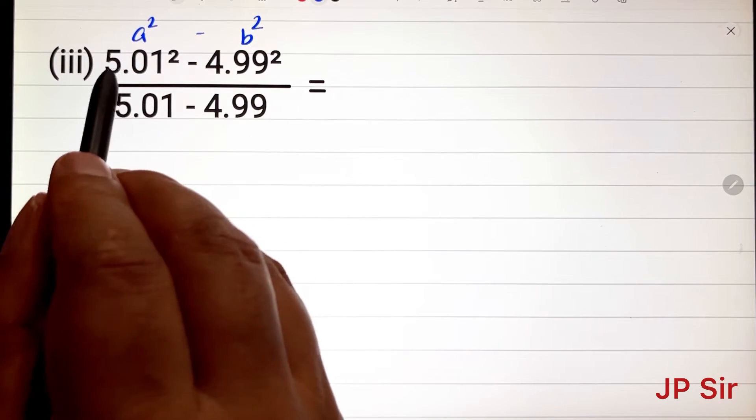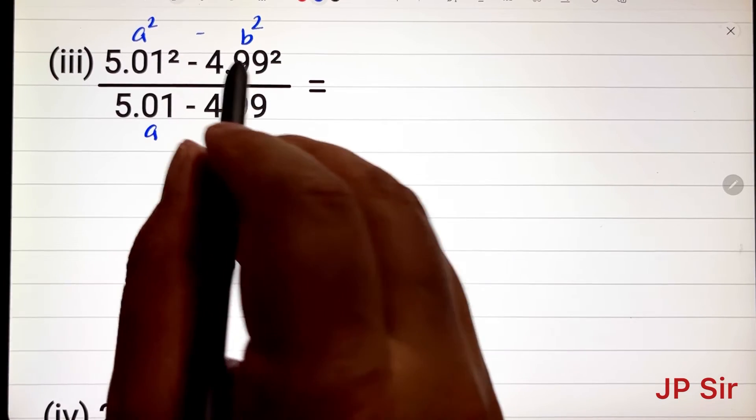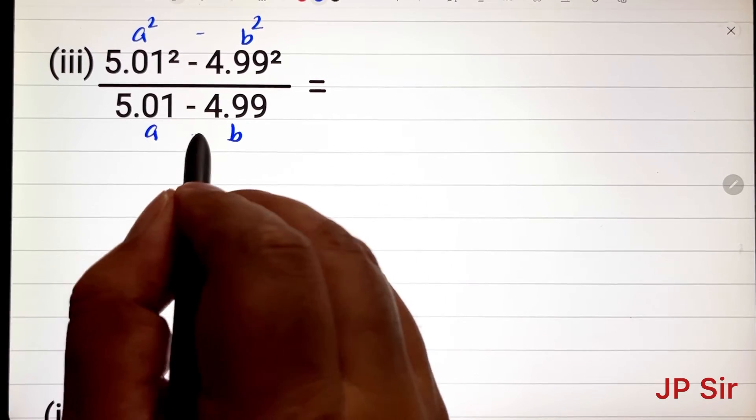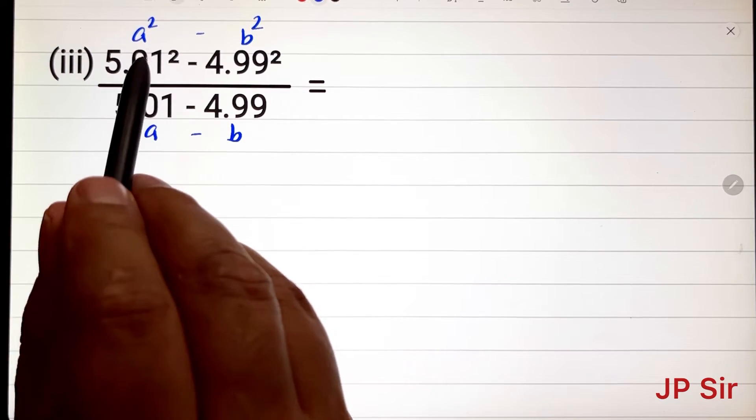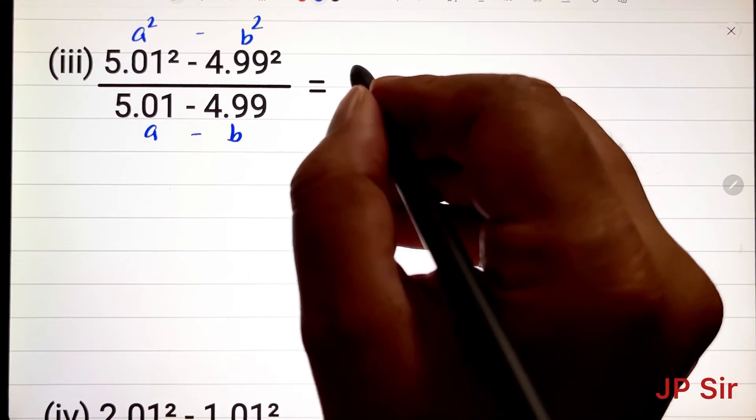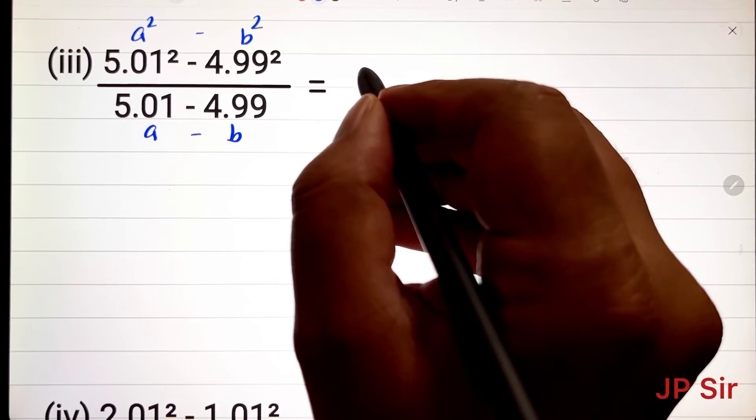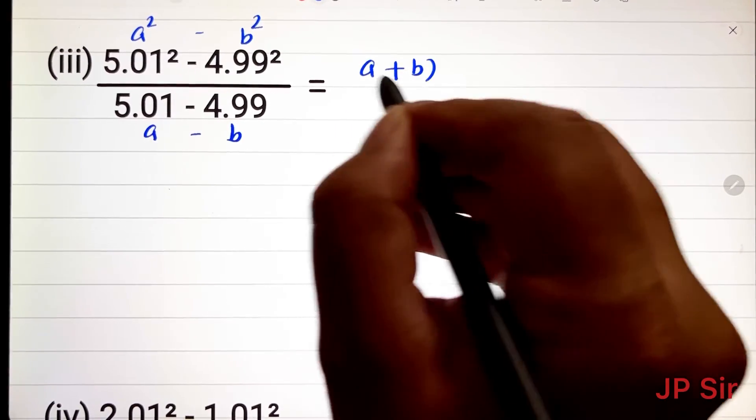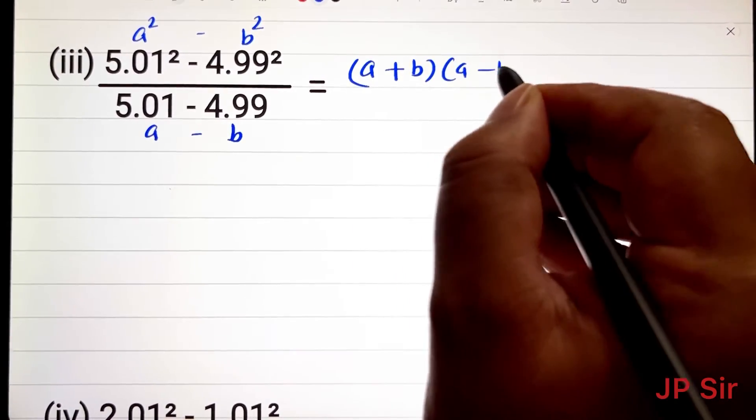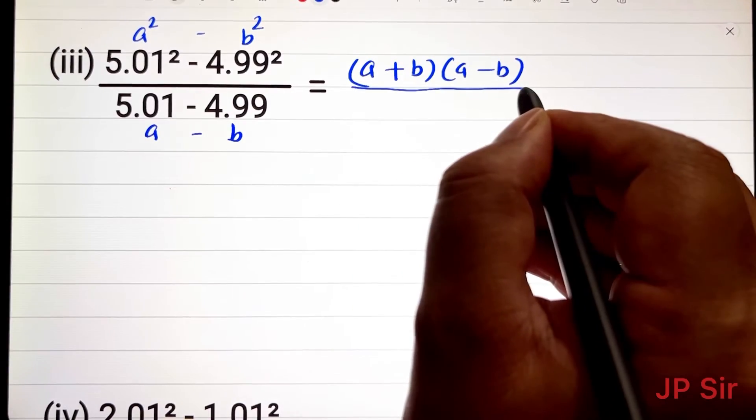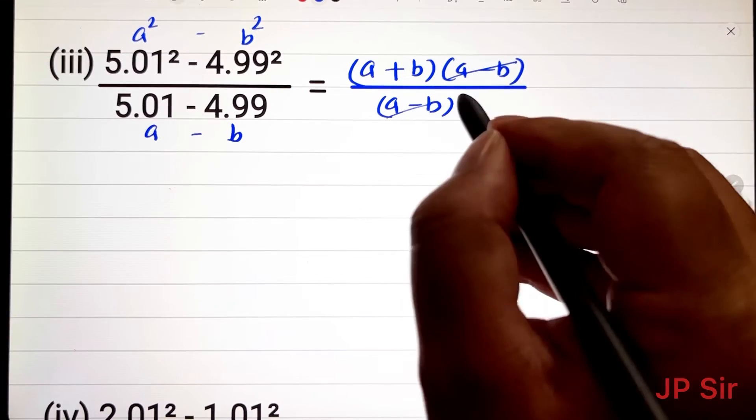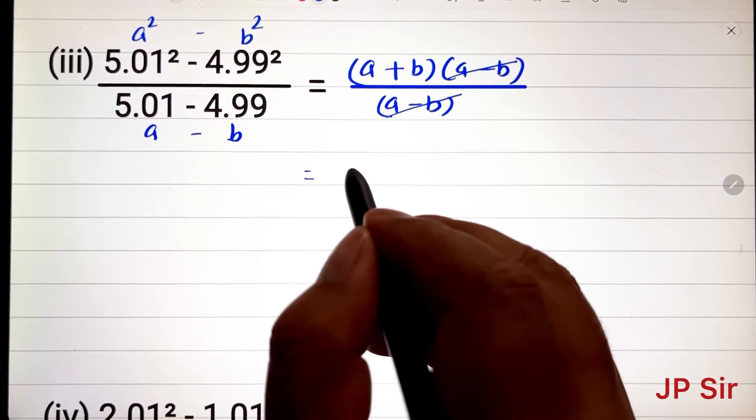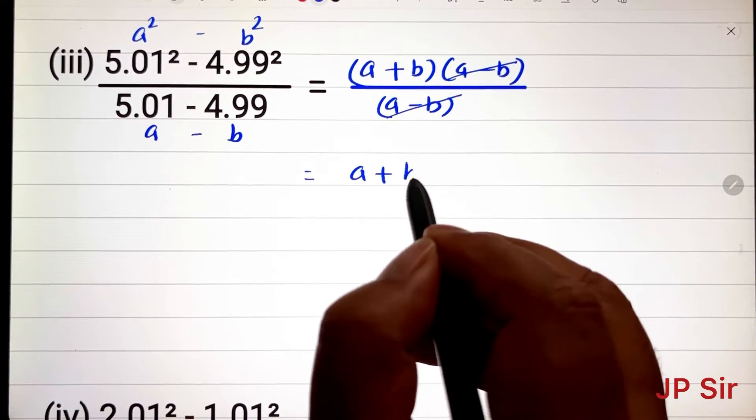So this is a² - b². Consider this a, and this b. So basically this is the form a² - b². So a² - b² is (a + b)(a - b). And in the denominator, we have a - b.